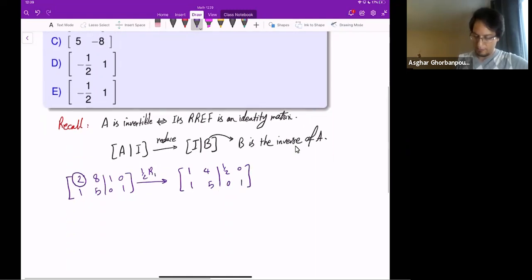Then I have to get rid of this entry, so that is row two minus row one. This is [1 4 | 1/2 0], and here is [0 1 | -1/2 1].